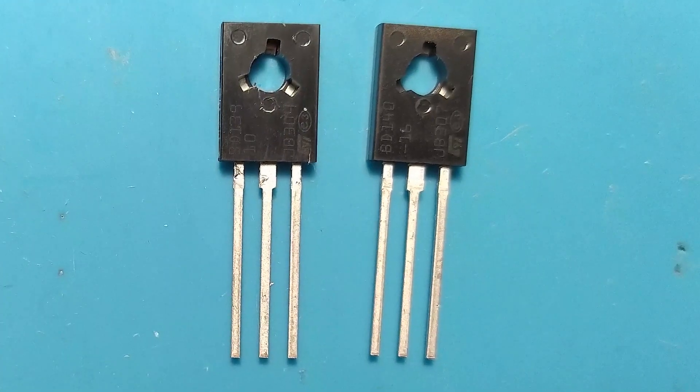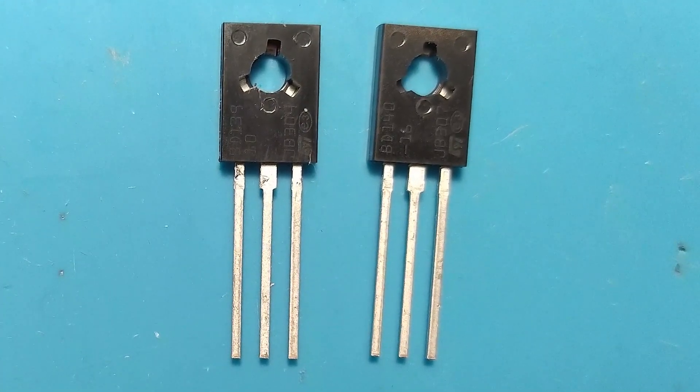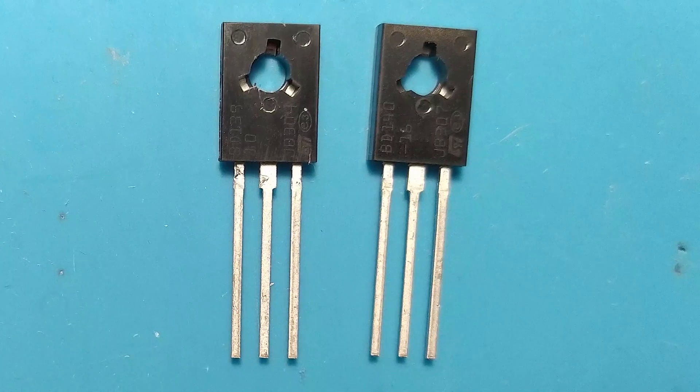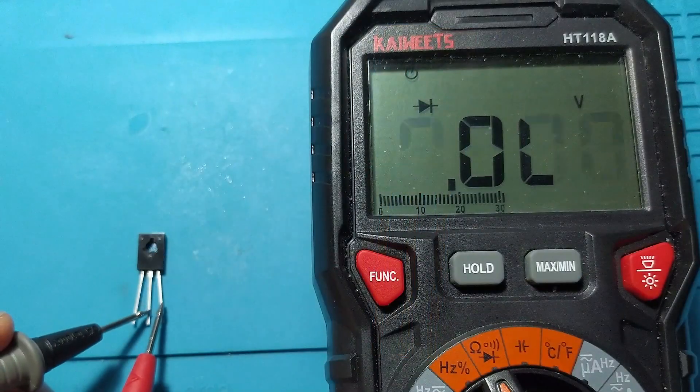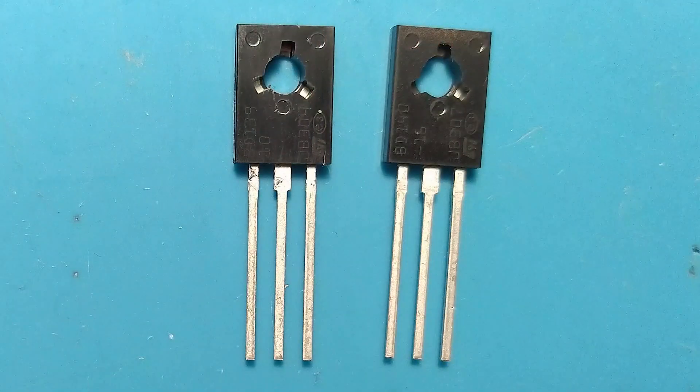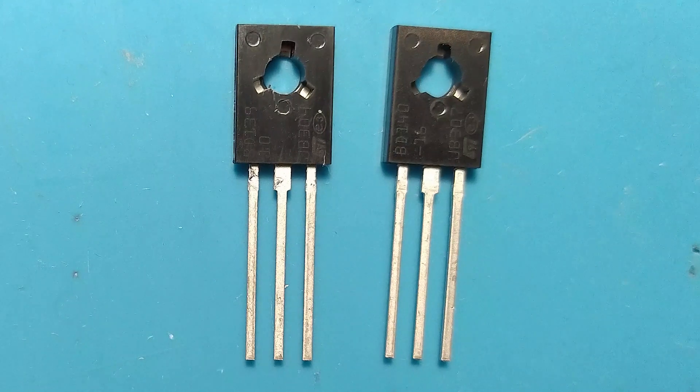In our case, we have as an example the well-known BD139 and BD140 transistors. Before moving on to measuring them with the multimeter, we must know that the bipolar transistor is a semiconductor with three terminals, called base, emitter and collector.